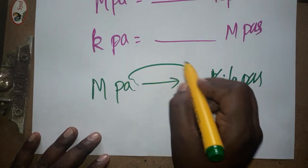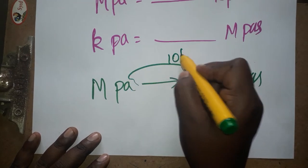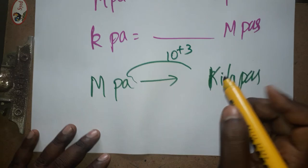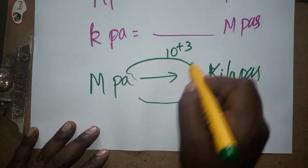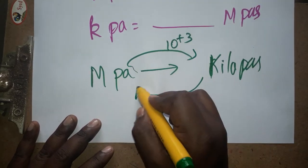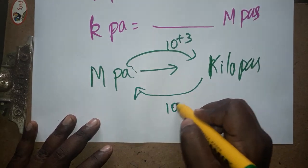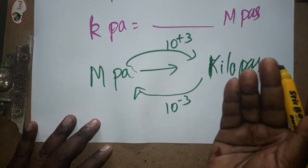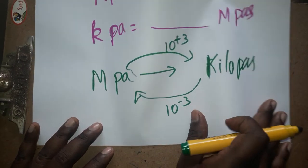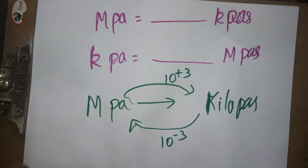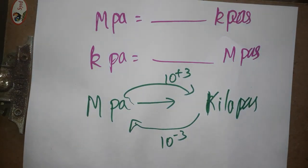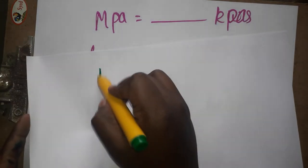When converting from megapascal to kilopascal, you use 10 to the power of plus 3. When converting the other way — kilopascal to megapascal — you use 10 to the power of minus 3. Very simple.